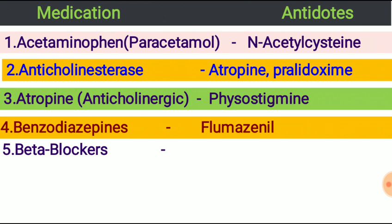Next, beta blockers. Beta blockers are used to manage abnormal heart rhythm. The antidote of beta blockers is glucagon or epinephrine.